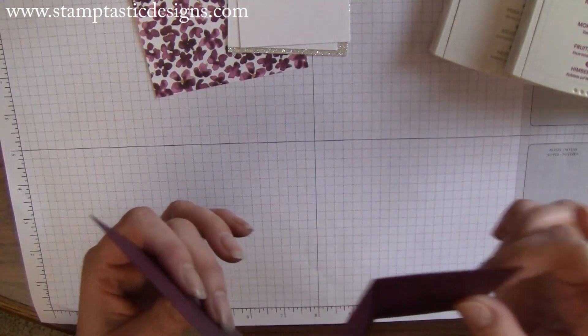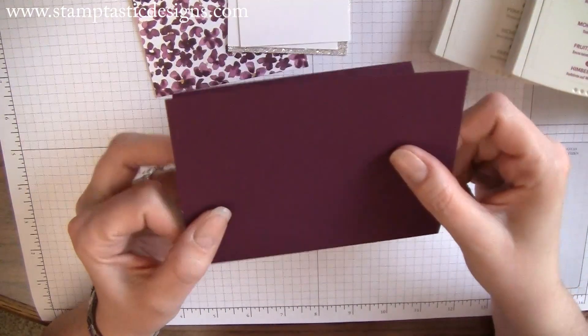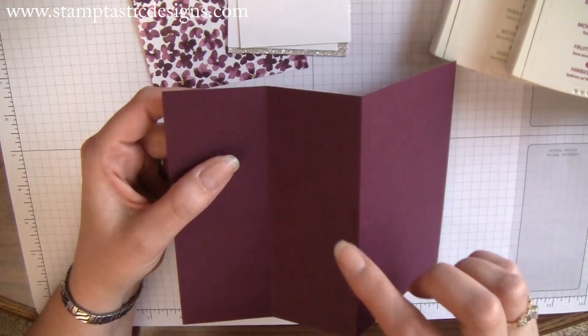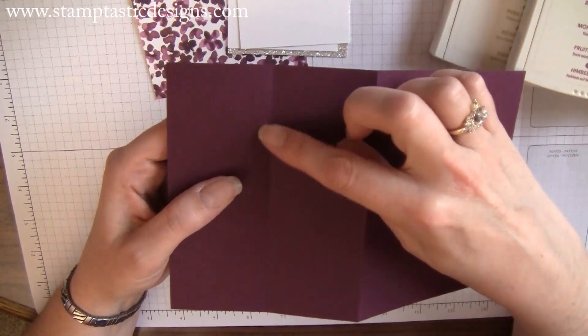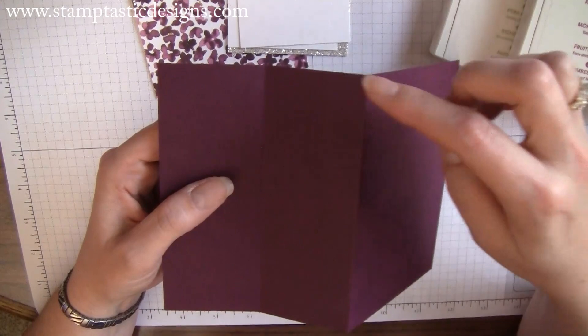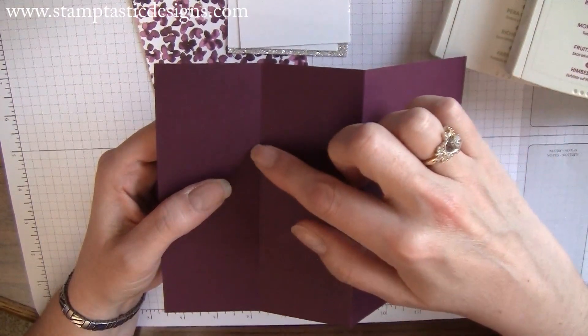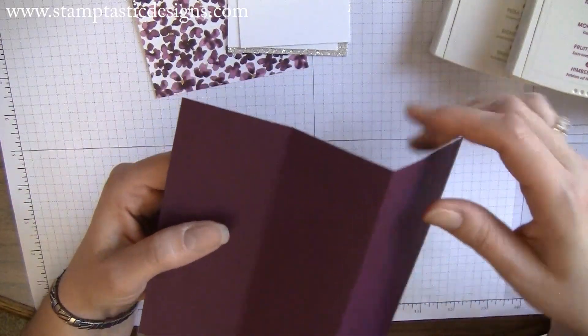Then you're going to take one of the flaps. Once you have your cardstock scored, take one of the flaps—it doesn't matter which side—and score it in half again. So the first piece is scored at four and a quarter, and the second piece you're scoring at two and an eighth.